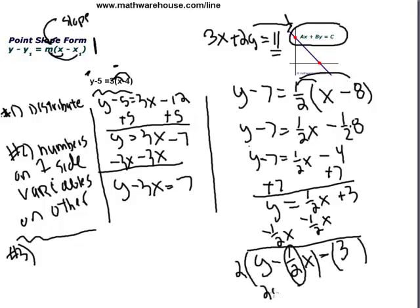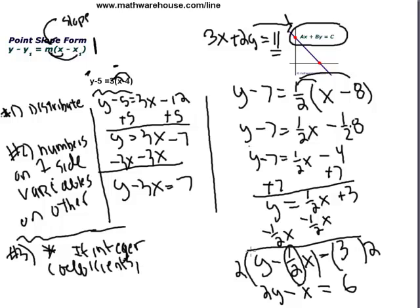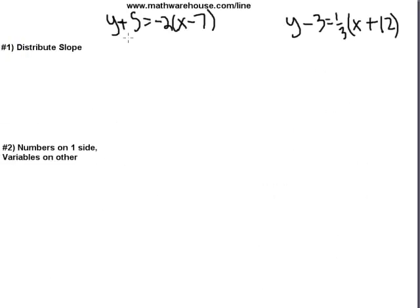And you end up with 2y minus, remember, 2 times one-half is 1. So minus x equals 2 times 3, or 6. So again, this third one is, if you need integer coefficients, then at least for this equation, we just needed to multiply by the denominator of one-half. It can get a little more complicated.